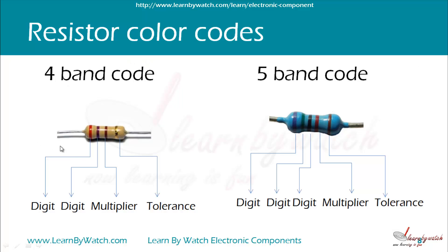In a 4-band code resistor, the first band represents a digit, the second band also represents a digit, the third band represents the multiplier, and the last band is the tolerance band.